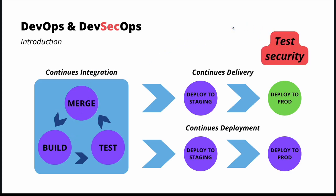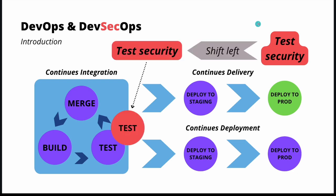When we think about security testing, traditionally, when the application is developed and almost ready to go to production, at this final stage, there might be some testing activities focused on security — such as penetration testing or other ways of assuring that the application is safe. What DevSecOps tries to facilitate is a so-called shift left mindset: instead of running security tests at the very end of the process, we move security testing left, closer to the development cycle.